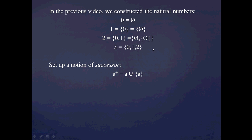In addition, we set up the notion of successor. We said that if you have some number A — or more generally some set A — the successor A+ is going to be given by A union the set containing A. So for example, 2+, which we would commonly call 3, is going to be given by 2 union the set containing 2. So you can see that this is going to be {0, 1, 2}.